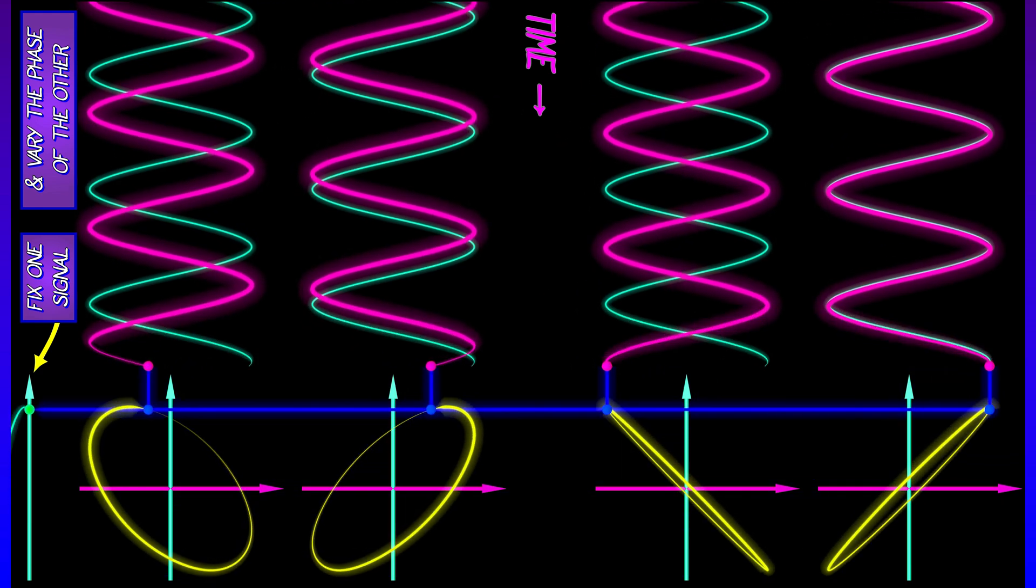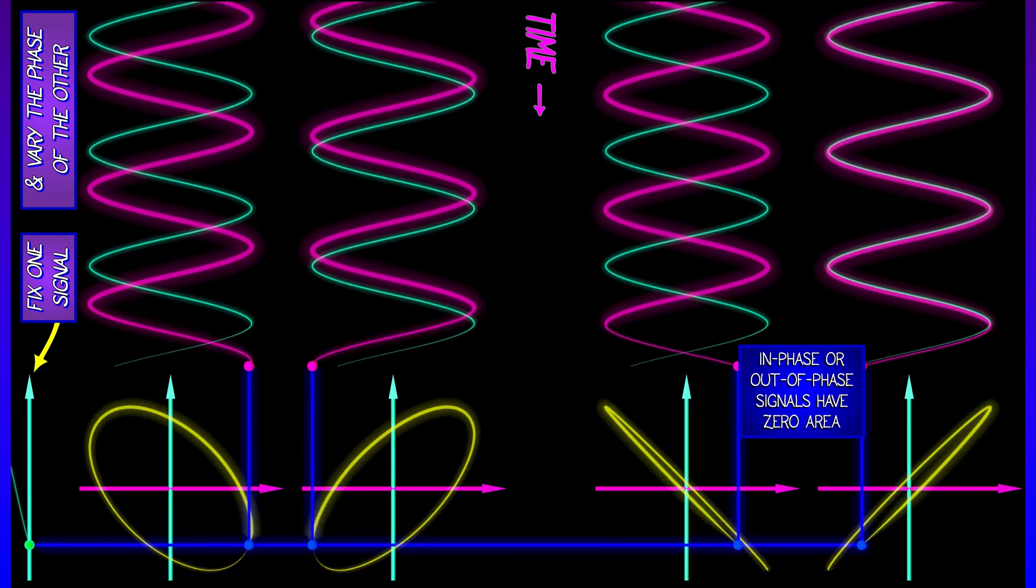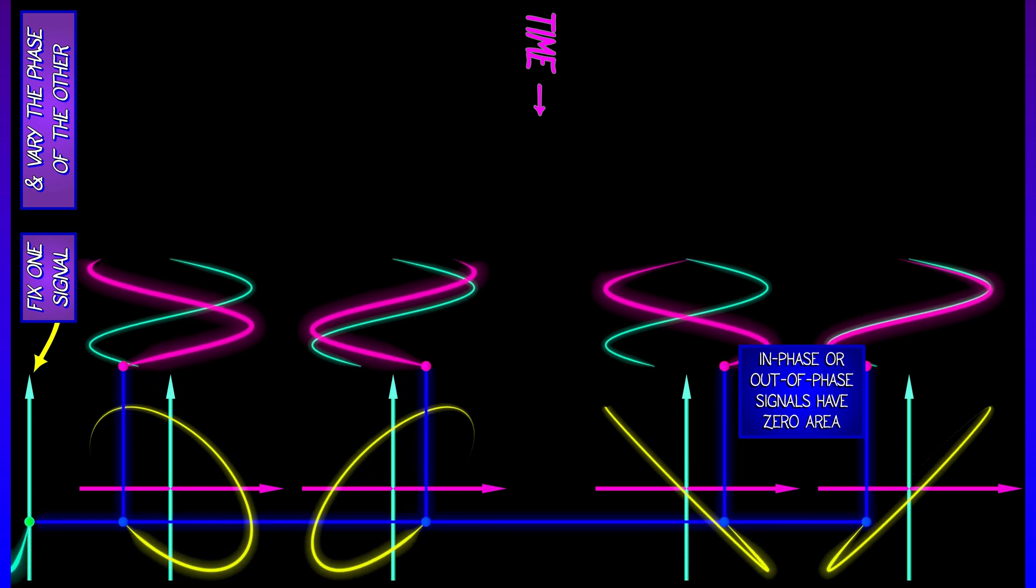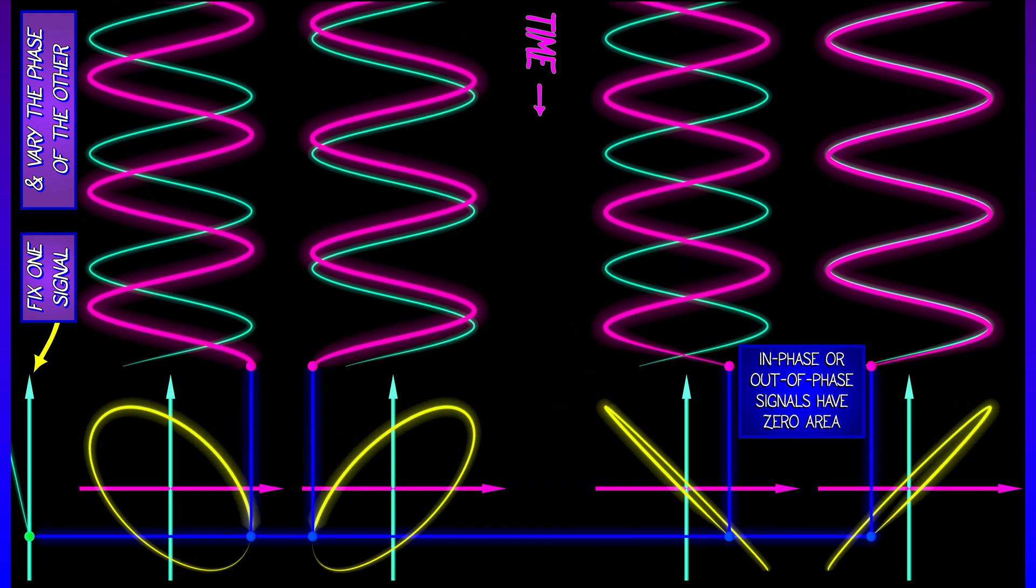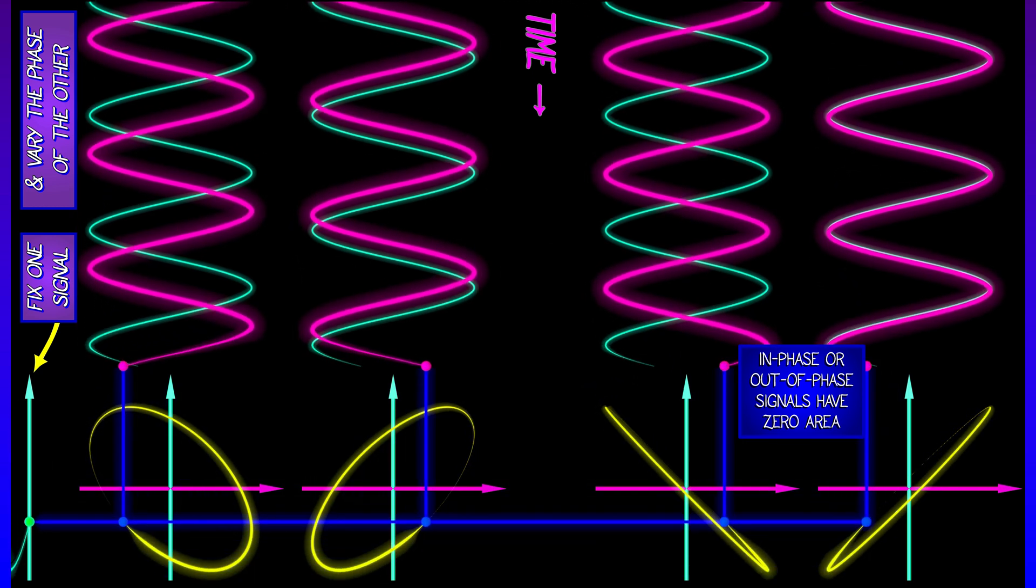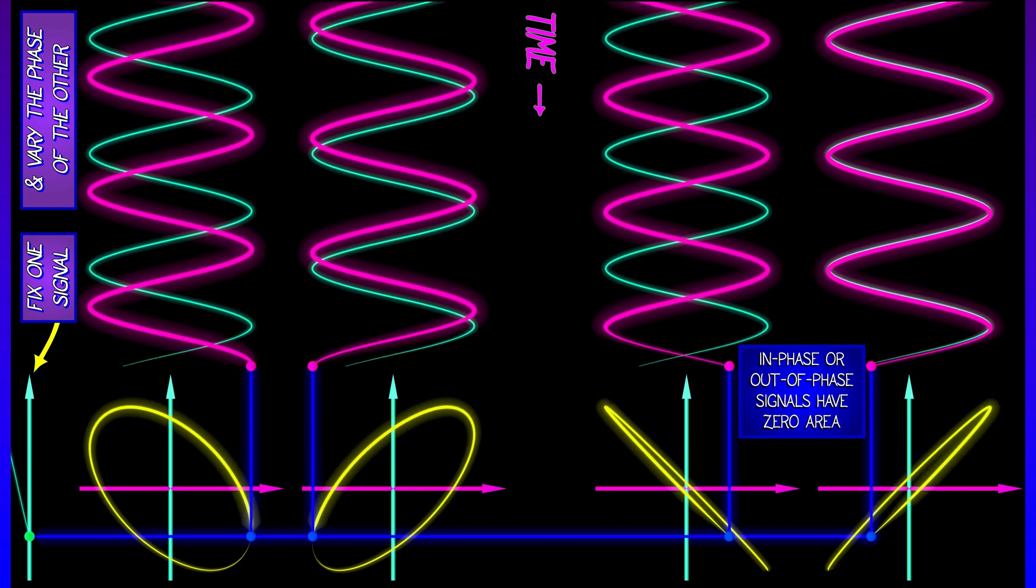Now, in the case where these signals are perfectly in phase or perfectly out of phase, then the curve that gets traced out in the x1, x2 plane is just a straight line. Either slope plus one or slope minus one, it's as if they're perfectly correlated or perfectly anti-correlated signals.